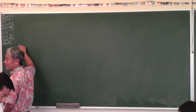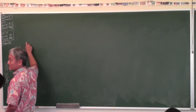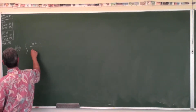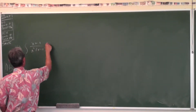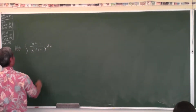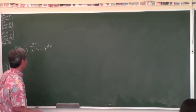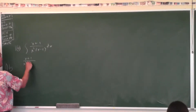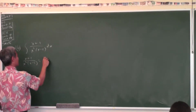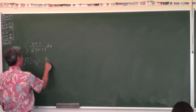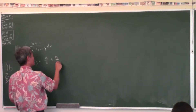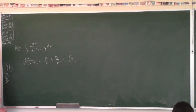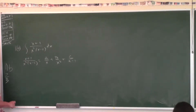The key to doing partial fractions is setting up the problem correctly. Did everybody set it up like this: A over X, plus B over X squared, plus C over X minus 1?